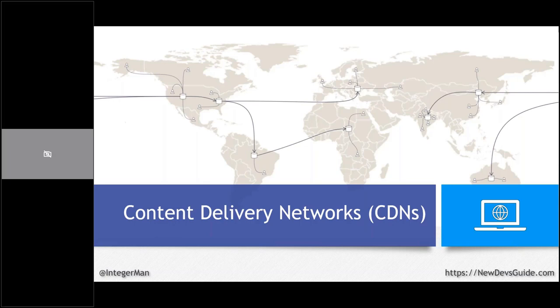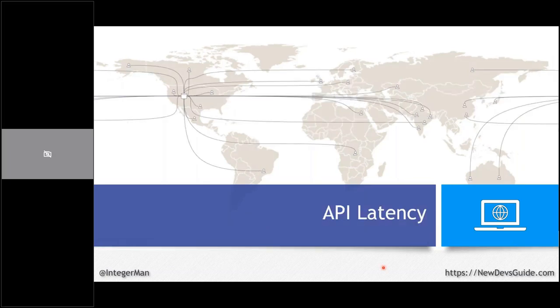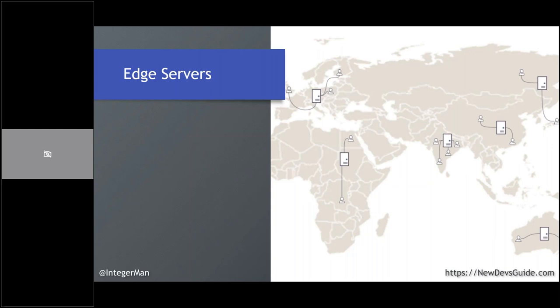Even with a CDN serving files quickly, API calls still go back to servers in the US. The solution is edge servers: running your application in data centers throughout the world so users connect to the nearest one. This introduces a lot more complexity around data sharing and significantly more cost, but your application becomes globally available with much more redundancy. You won't need to worry about this unless you're at a really large scale.